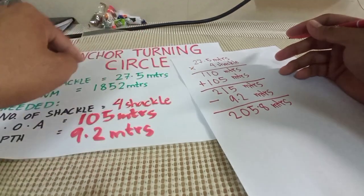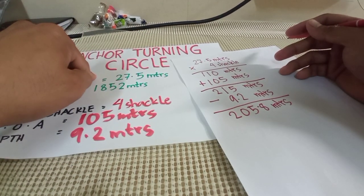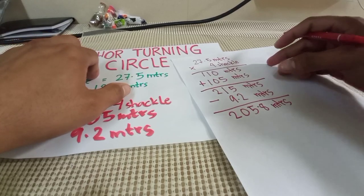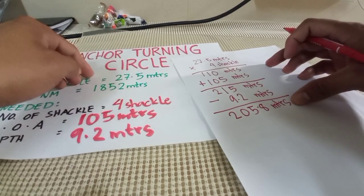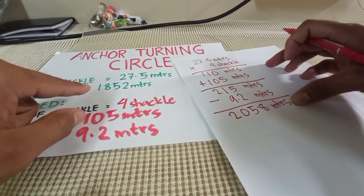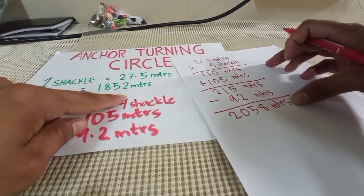But the anchor turning circle should be in nautical miles. So we have to convert the meters to nautical miles. Since 1 nautical mile is equivalent to 1852,